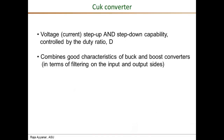A main advantage of the Ćuk converter is that it combines the good characteristics of both the buck converter and the boost converter. The buck converter has a smooth output current to the capacitor-load combination, whereas its input current is pulsating. The boost converter has a smooth input current, whereas its output current going into the capacitor-load combination is pulsating, requiring a very large capacitor. The Ćuk converter results in smooth currents at both the input and output sides.